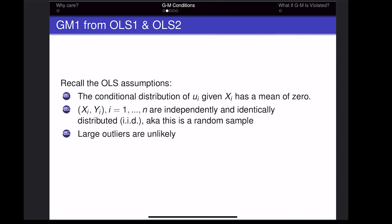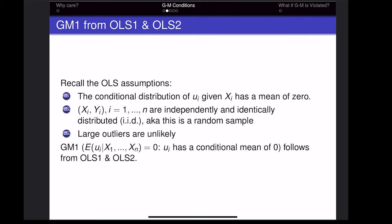As a reminder, the OLS assumptions are: first, the conditional distribution of the error term given xi has a mean of zero; second, we have a random sample; and third, large outliers are unlikely. The first Gauss-Markov condition — that the expected value of the error term given x equals zero — comes from the first two OLS assumptions.